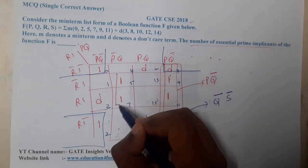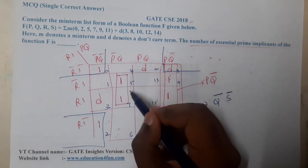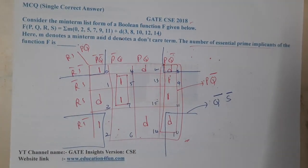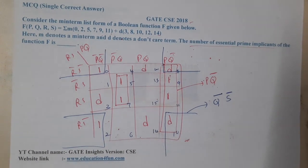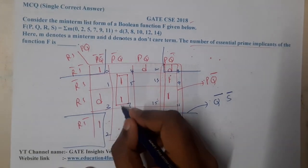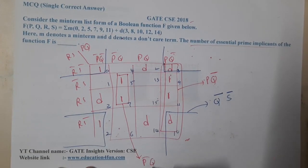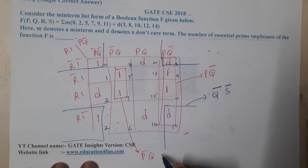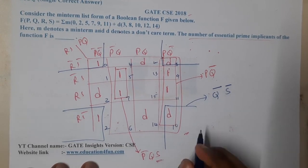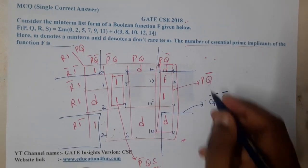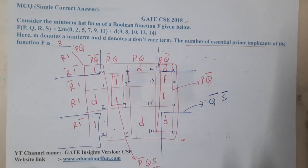The remaining left-out minterms can only be taken as a pair of two, since there is no chance of forming a group of four or more. This pair gives us P̄Q — P-bar Q. So these are the three essential prime implicants.